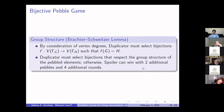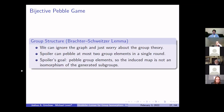Rachter and Schweitzer show we don't have to think about the graphs — we can just think about the groups. Their key lemma says: Duplicator has to send group element vertices to group element vertices setwise, and Duplicator must select bijections that respect the group structure on the pebbled elements. Otherwise, Spoiler can win very quickly with two additional pebbles and four additional rounds. Effectively, we have a pebble game mapping group elements to group elements, where Spoiler can pebble at most two group elements in a single round. Spoiler's overarching goal is to pebble group elements so that the induced map is not an isomorphism of the generated subgroups.